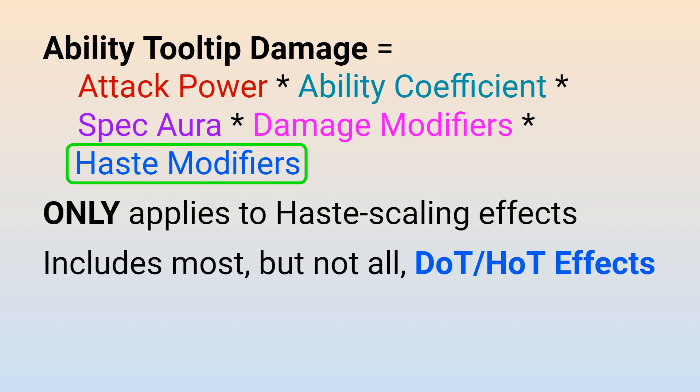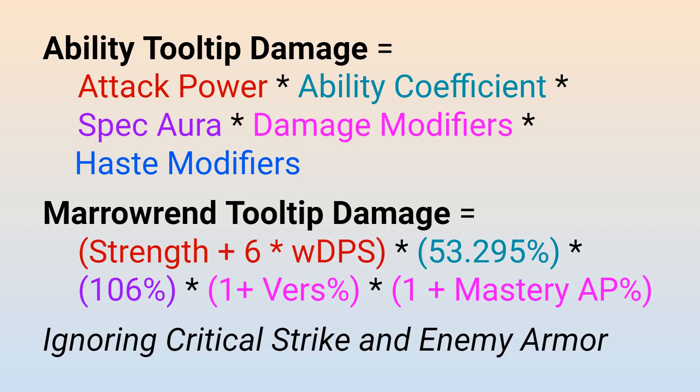Taken together, we can calculate our attack power from our strength and 6 times our weapon DPS. We can multiply this by the Marrowrend ability coefficient of 53.295%. Our spec aura increases our Marrowrend damage by an additional 6%. The two generic damage multipliers that apply in this case are our versatility increased damage and our increased attack power coefficient from tank mastery. And because Marrowrend is a straightforward direct damage ability, it does not benefit from any form of haste scaling. That being said, we are not considering critical strike damage in these calculations, and being a physical attack, actual Marrowrend damage will generally be reduced by about 30% due to enemy armor if you want to check the actual damage the ability does against enemies.